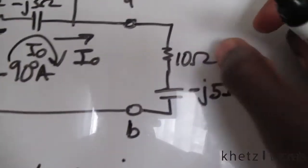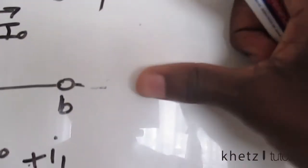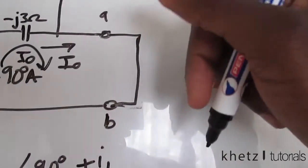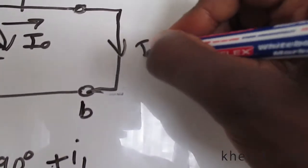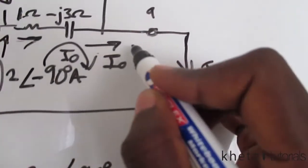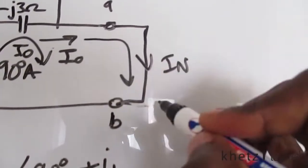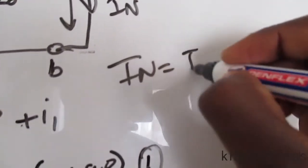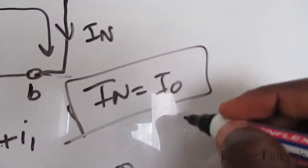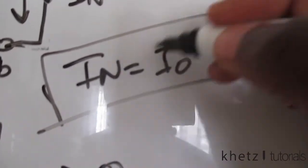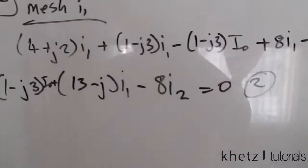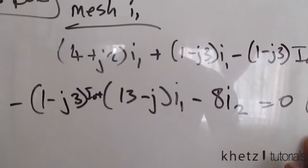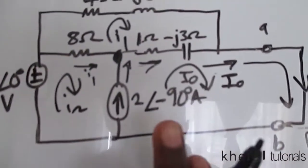So our task is simply to find IO. After finding IO we know we've found IN. We haven't yet touched the super mesh, so now let's formulate that equation.